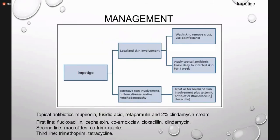For localized impetigo, we wash the skin, remove the crust, and use disinfectants and topical antibiotics. If the condition is not settled or there is extensive skin involvement, oral antibiotics are used — penicillin-sensitive agents like flucloxacillin, cloxacillin, fucidic acid (oral as well as topical), and many more.